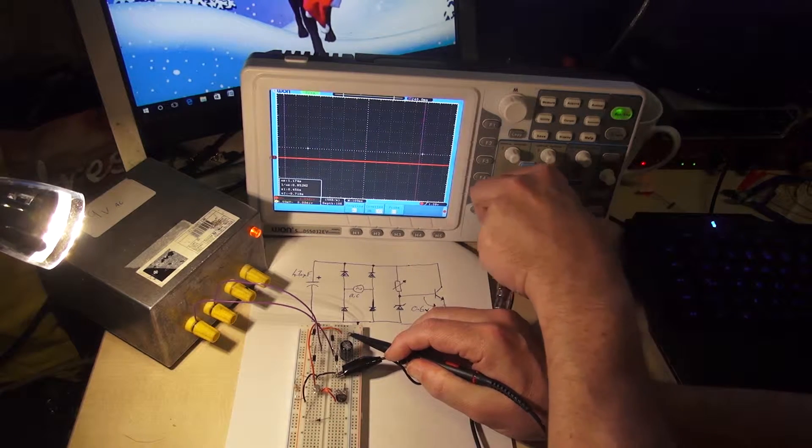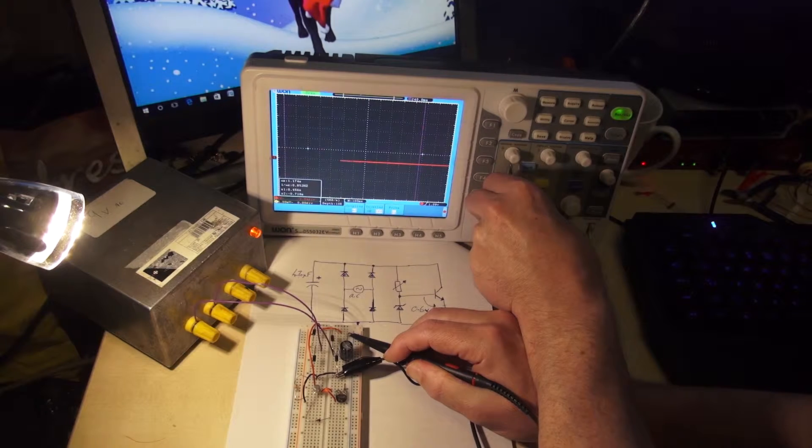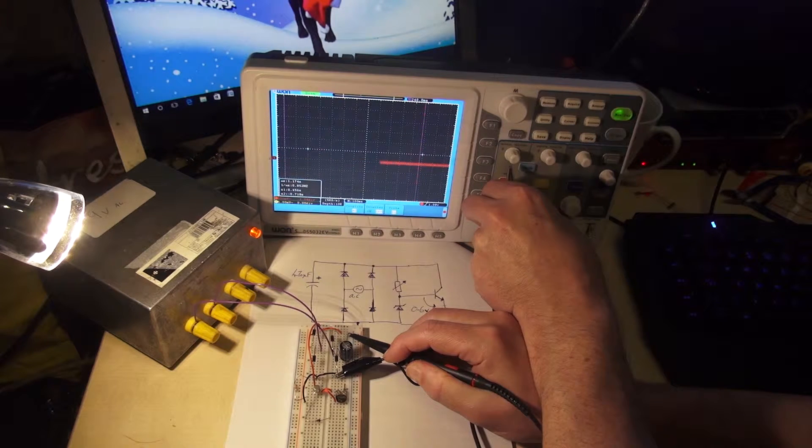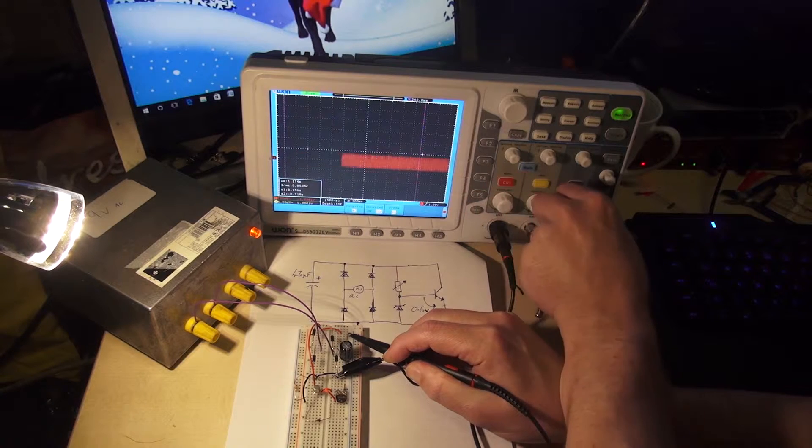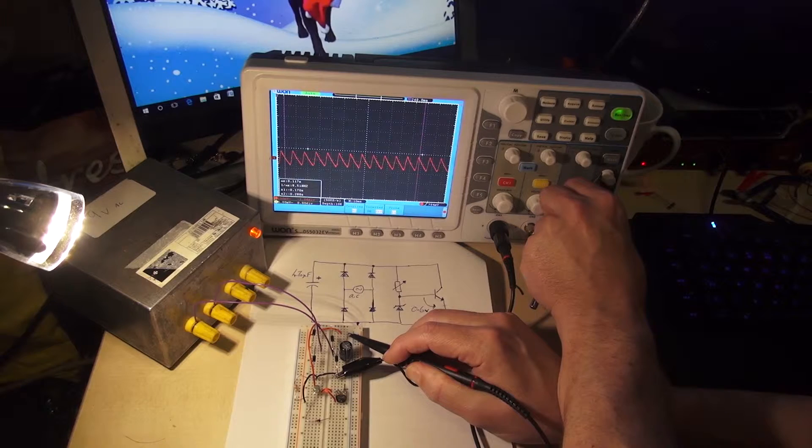It's taken all the DC out of the signal. I can zoom in. At the moment with 5 volts per division, as we zoom in you can start to see that ripple. That's the ripple on the input there. We've just changed the time base, so you can see that's the capacitor charging and discharging.